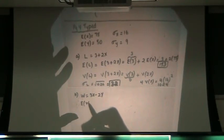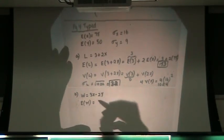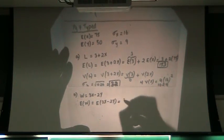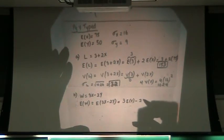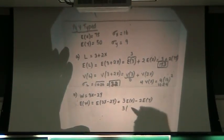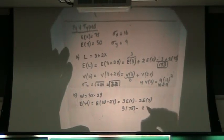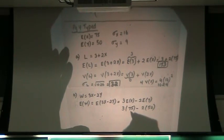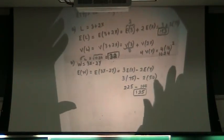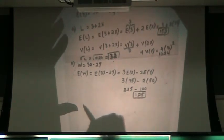First question: find E of W — that's the mean. That's E of 3X minus 2Y, so 3·E(X) minus 2·E(Y). So 3 times 75 minus 2 times 50: that's 225 minus 100, which equals 125. That's E of W.